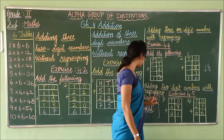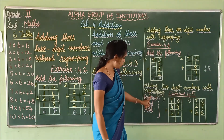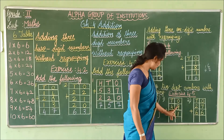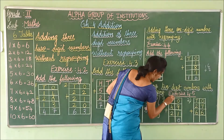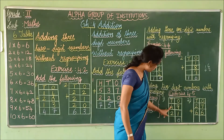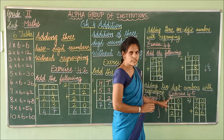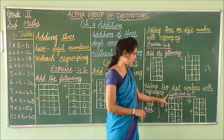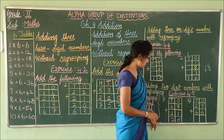Now, adding 2-digit numbers with regrouping. Exercise 4.5: Regroup and add. See the first problem. Always start from the 1s place. 9 plus 1 is 10 — so 0 goes in the 1s place and 1 is carried over to the 10s place. In the 10s place: 4 plus 2 is 6, plus the carry-over 1 is 7. Don't forget to add the carry-over number. So 49 plus 21 is equal to 70.